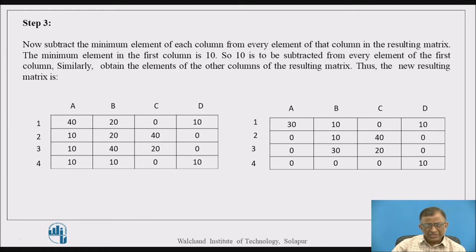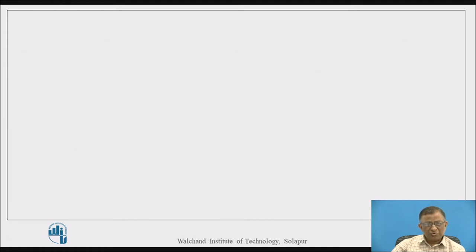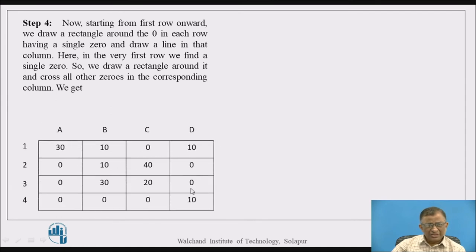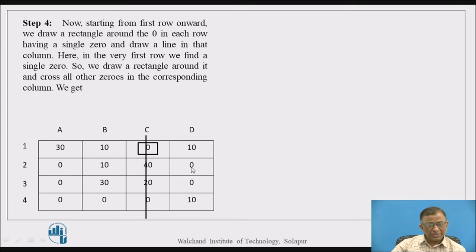To make assignments at the positions of zero, we proceed row-wise. In the first row, there is a single zero — so programmer one must be given job C, with no other option. We bracket it and cancel column C with a vertical line. In the second row there are two zeros — so there is an option and we don't decide immediately. The third and fourth rows also have two zeros each, so we skip those as well.